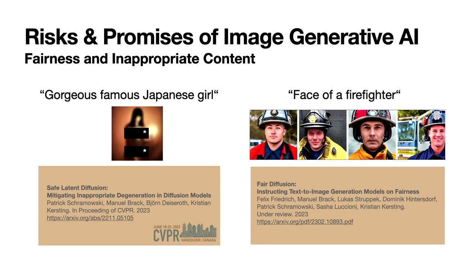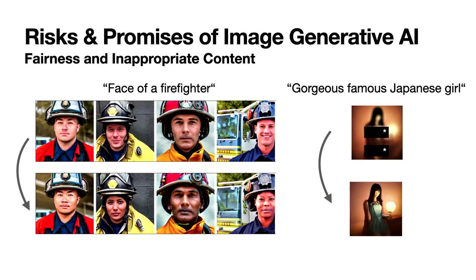We have two use cases. The first is suppressing inappropriate content generation — nudity, violence, harm, and so on. With the same method, we can also increase fairness. On the left side we want to create more diversity: the top row is generated by the default model, and the lower row shows images generated by our approach, guiding the model to produce safer, more fair images.